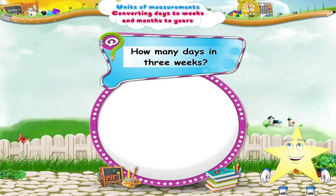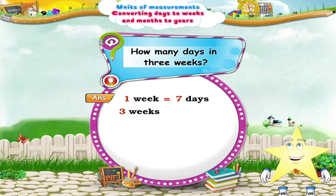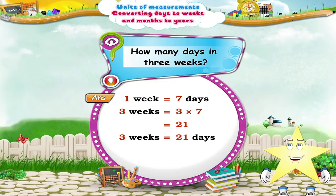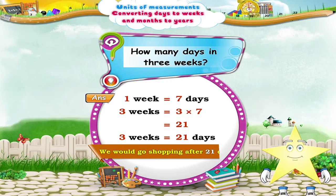Three weeks means three multiplied by seven, which is 21 days. Stari, we would go shopping after 21 days.